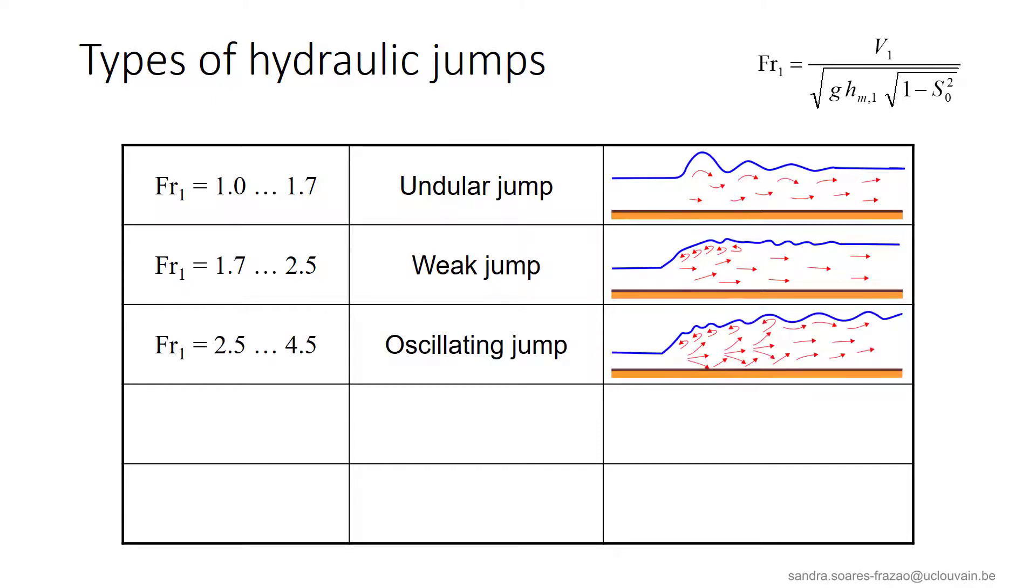Then, for Froude numbers up to 4.5, we can observe an oscillating bottom jet, sometimes directed towards the free surface, sometimes towards the bed. These oscillations induce free surface waves with low energy dissipation that can induce damages in the downstream areas, sometimes even far from the jump location. Such an oscillating jump should thus be avoided.